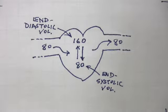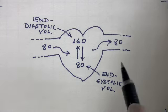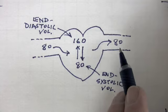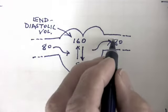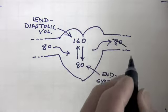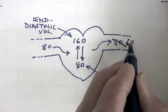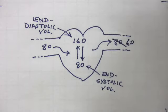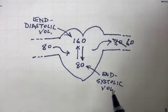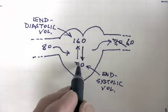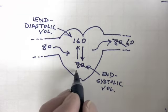Let's assume something happens to affect end systolic volume. For example, for some reason, less blood is ejected from the ventricles. Instead of 80 milliliters, let's say 60 milliliters is ejected. If that happens, how much blood remains at the end of systole? Actually, not 80, but 100.